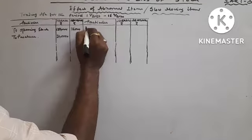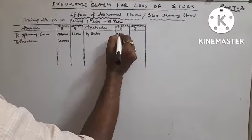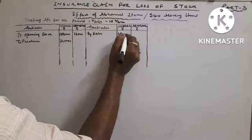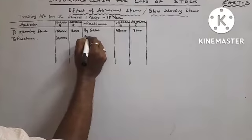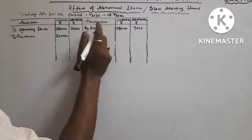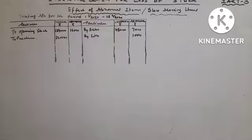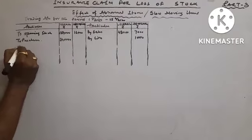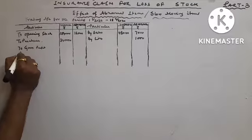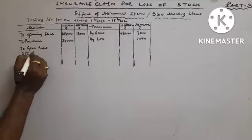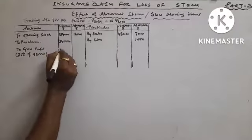By sales 4,80,000. Abnormal sold at 7,000. By P&L by loss 1,000. To gross profit 25 percent of 4,80,000, 1,20,000.